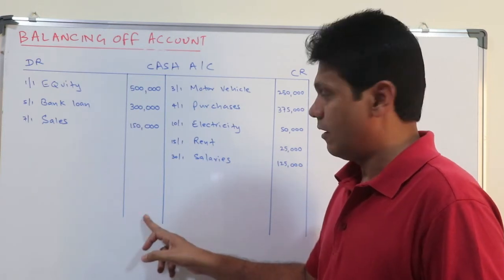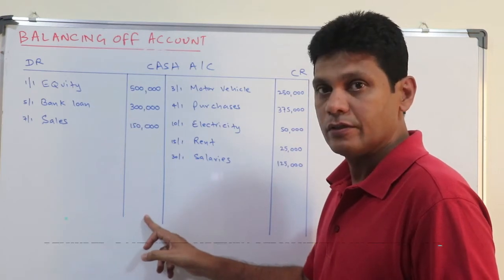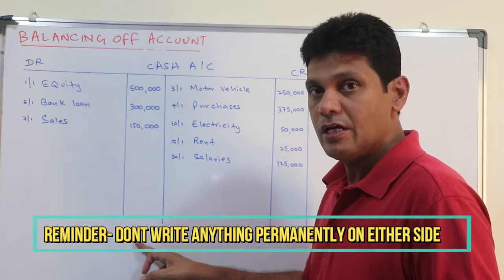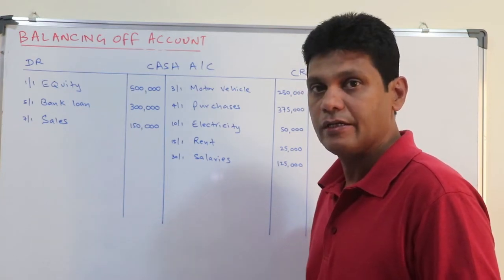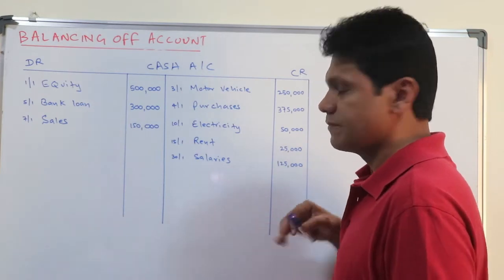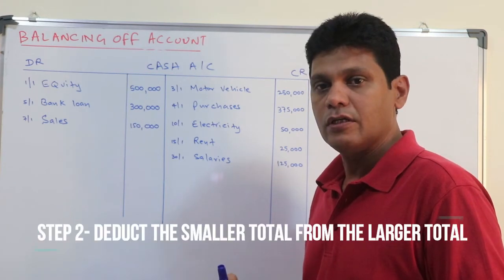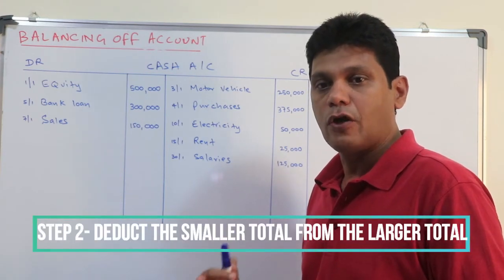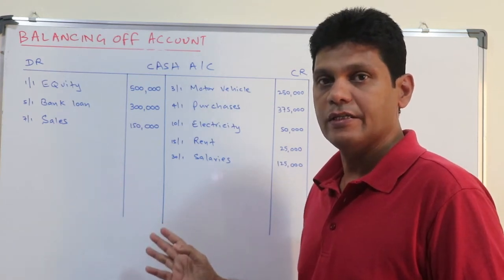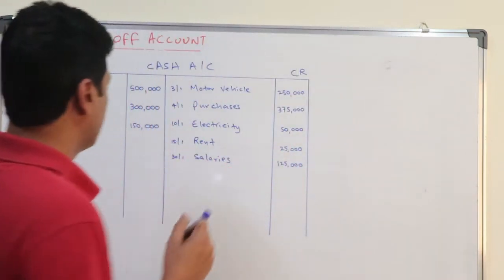After taking the total, don't write it down permanently in the account. You can either write it in pencil or take a piece of paper and write it down. After taking the balance, what you should do is deduct the smaller total from the larger total to find out the balance.